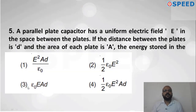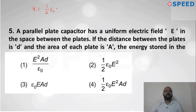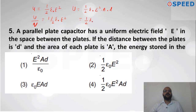Question five: A parallel plate capacitor has uniform electric field E. Distance between plates is D and area of each plate is A. Energy stored is asked. We know energy density U = ½ε₀E². Energy = ½ε₀E² × volume = ½ε₀E² × A × D. So energy stored is ½ε₀E²AD. Checking options, option number 4 is correct.